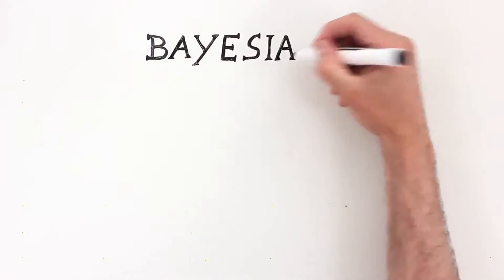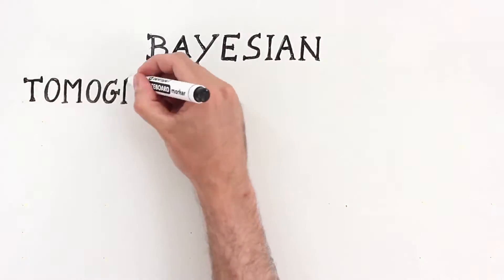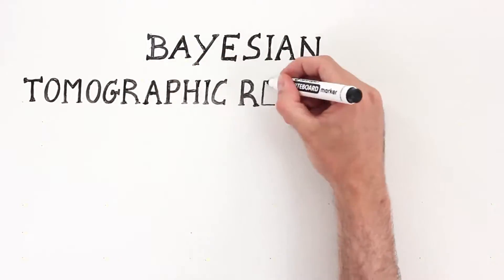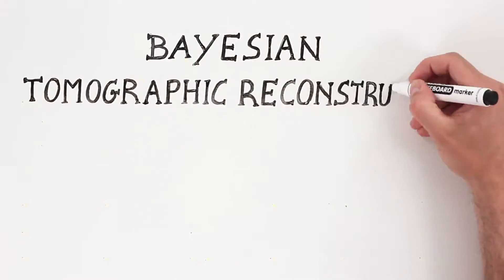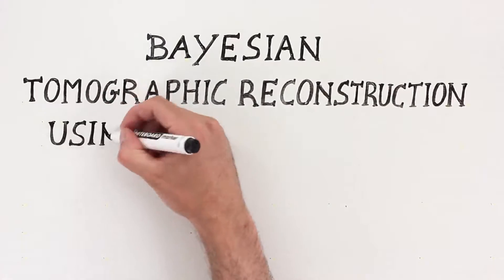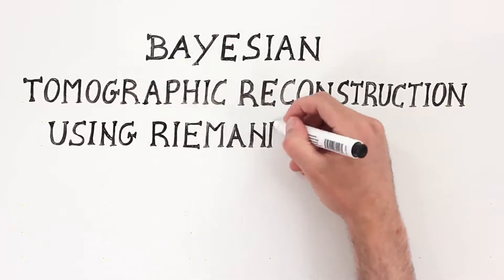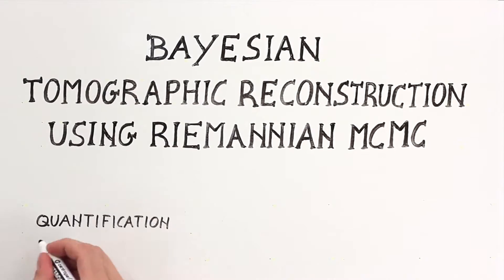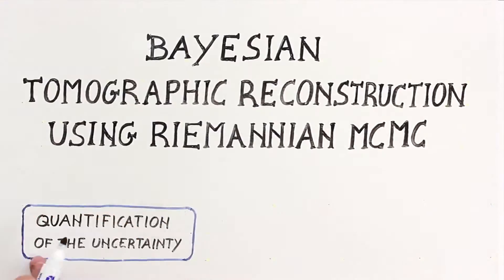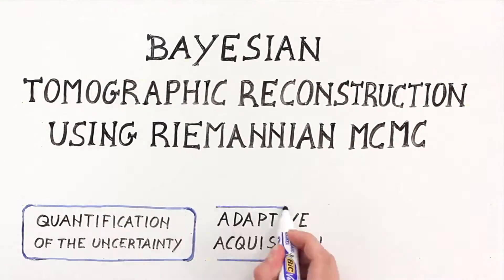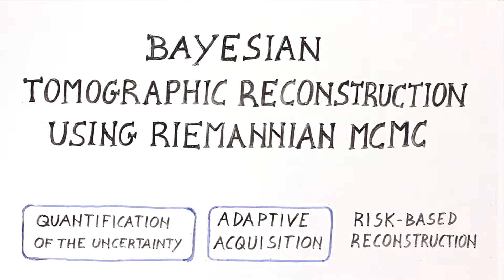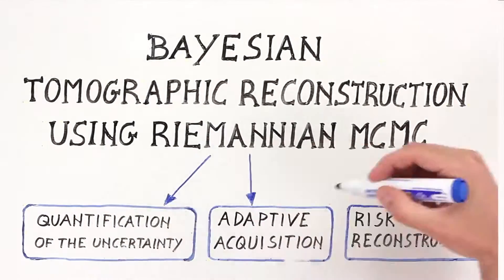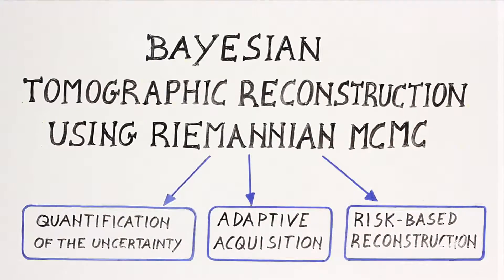This work explores the use of Monte Carlo sampling for tomographic image reconstruction, with application to the quantification of the uncertainty of tomographic images, adaptive imaging, and risk-based reconstruction.